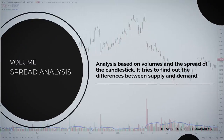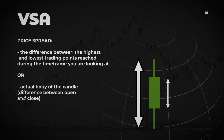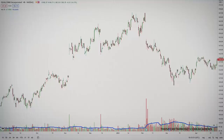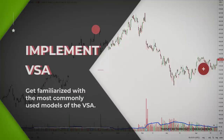Volume Spread Analysis is the type of analysis based on volumes and the spread of the candlesticks. It tries to find out the differences between supply and demand. The price spread is the difference between the highest and the lowest trading points reached during the timeframe you are looking at — which may be weekly, daily, hourly, or whatever other timeframe you choose. Some traders consider the actual body of the candle as the spread. There are a lot of different interpretations of the VSA, which makes it difficult to understand for a beginner trader. Make sure you watch the video about volume spread analysis after you finish this one.